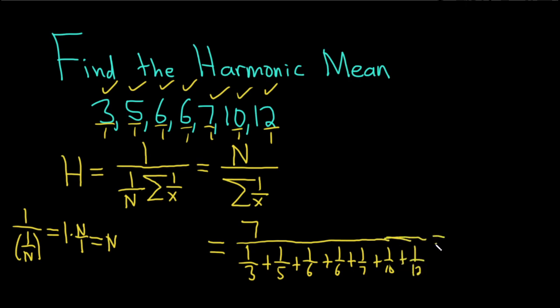And you can put this in your calculator. I'm going to do that now. And let's see what amazing number we get. So 1 over 3 plus 1 over 5 plus 1 over 6 plus 1 over 6 plus 1 over 7 plus 1 over 10 plus 1 over 12. And that's 7 divided by all of that stuff.